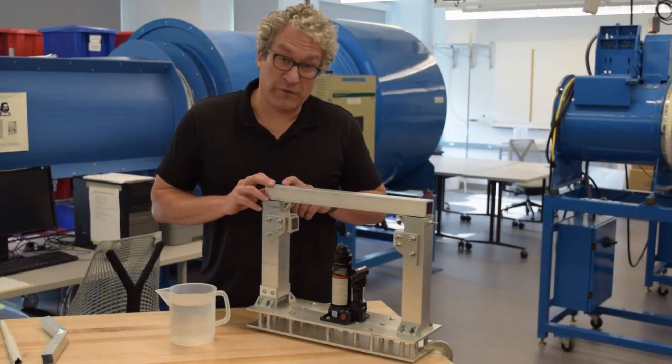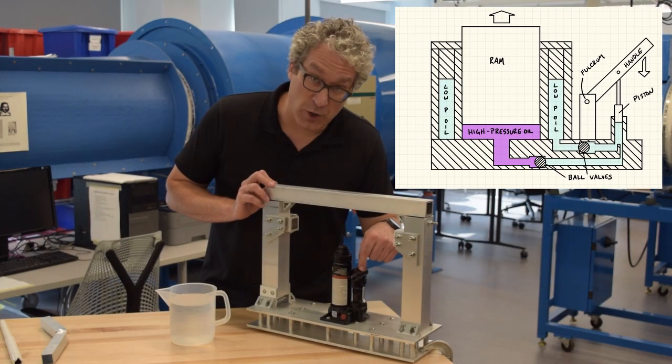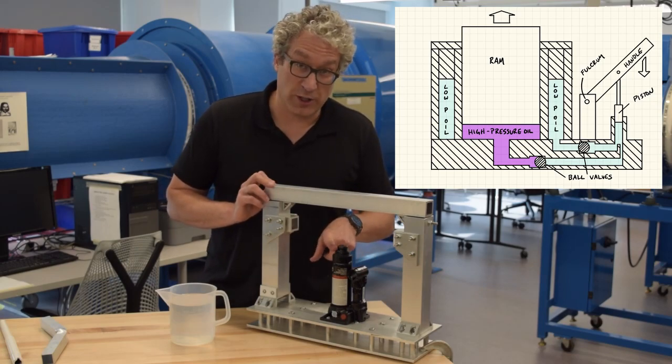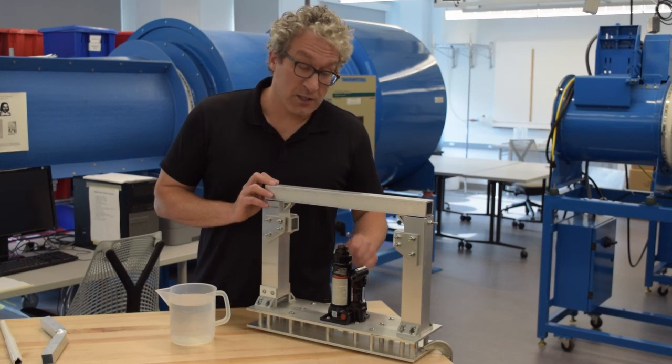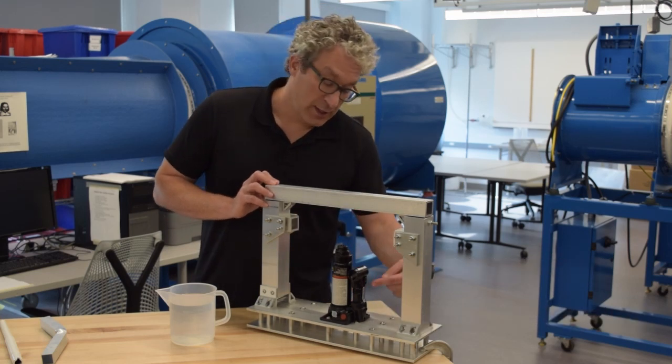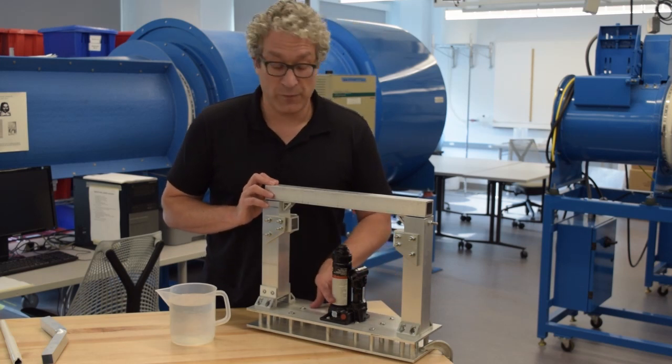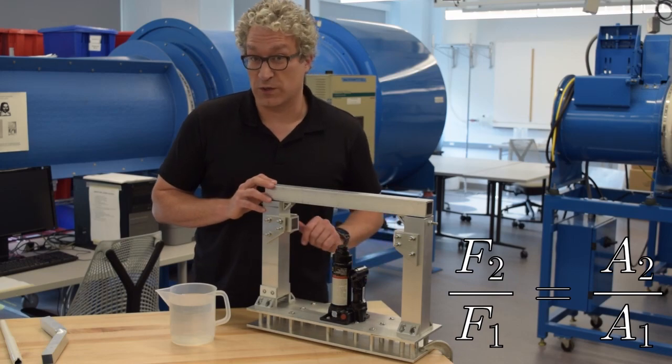If we look at the internal structure of a hydraulic jack, the force amplification comes from applying a force to a small area and having that generated pressure then be applied to a large area. The hydraulic machine being generated by this oil is a variable bore hydraulic cylinder. It's just a cylinder of small area on one side and a large area on the other side. And the mechanical advantage that we gain is the ratio of the areas and these two sides.